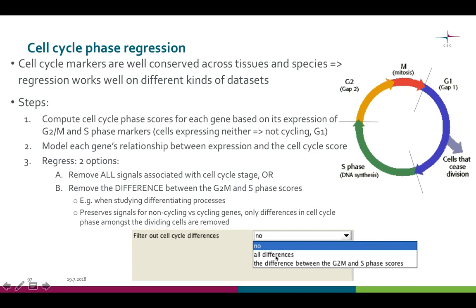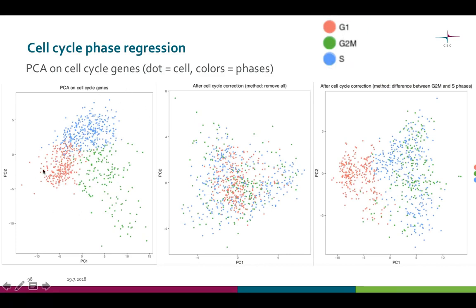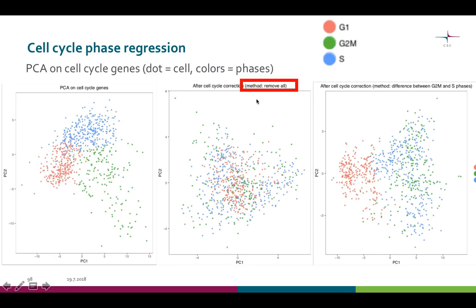When running the tool with the cell cycle regression option on, you will get two extra PC plots. In these plots, each dot is a cell and they are colored based on how they are scored to the different cell stages. Only the cell cycle genes are used for the PCA. In this example, you can see that the first plot shows clear separation according to the cell stage. The second plot will show the same cells after the regression of your choice — either where all cell cycle associated differences were removed, or where only the difference between G2M and S were removed.